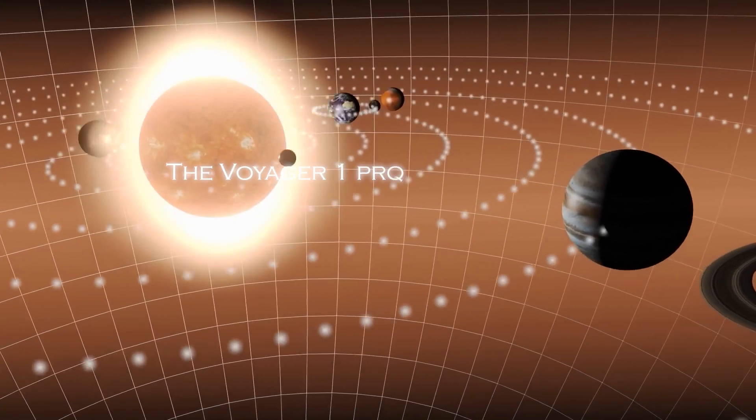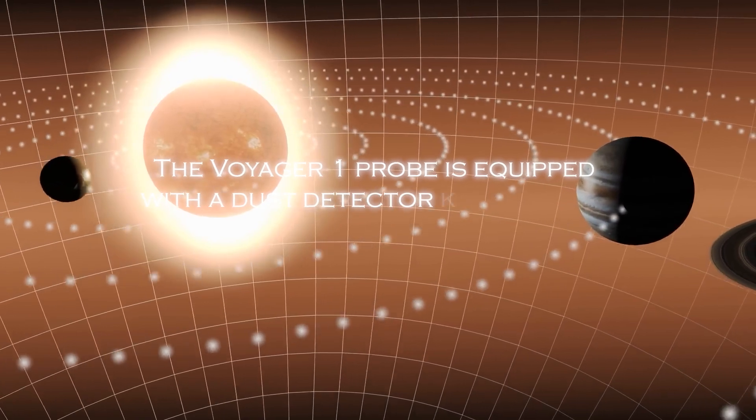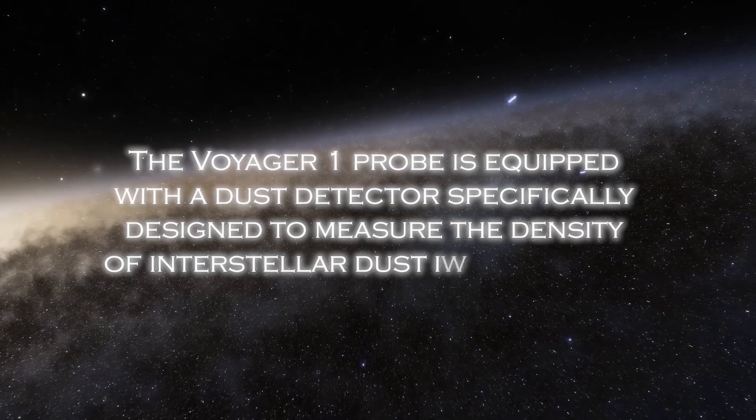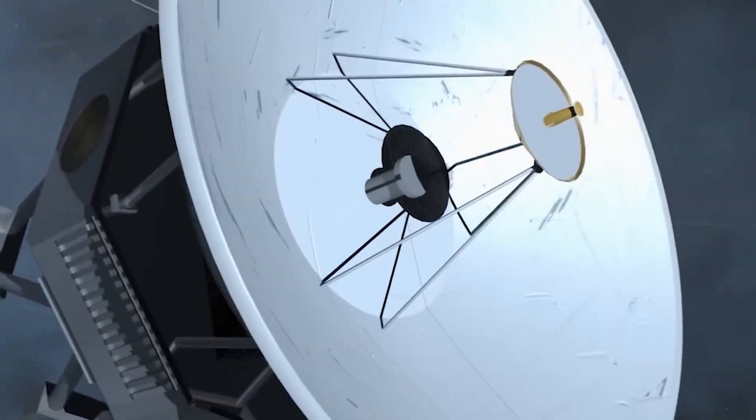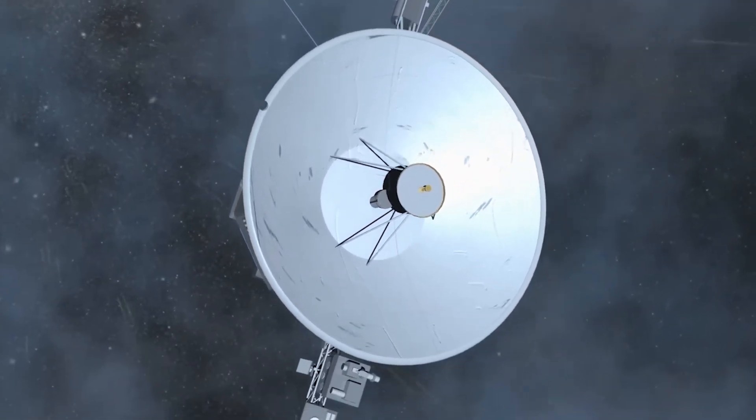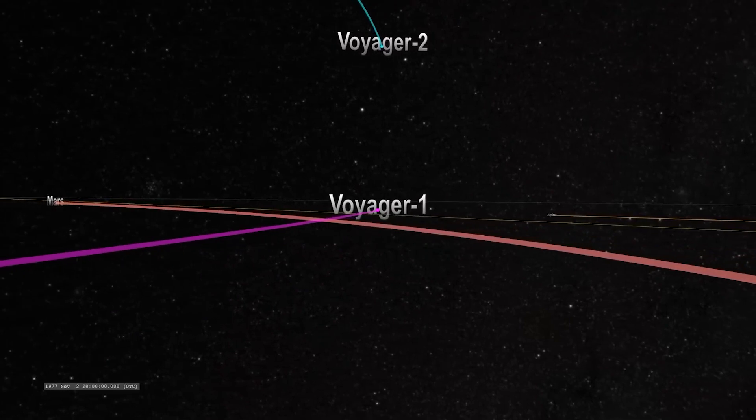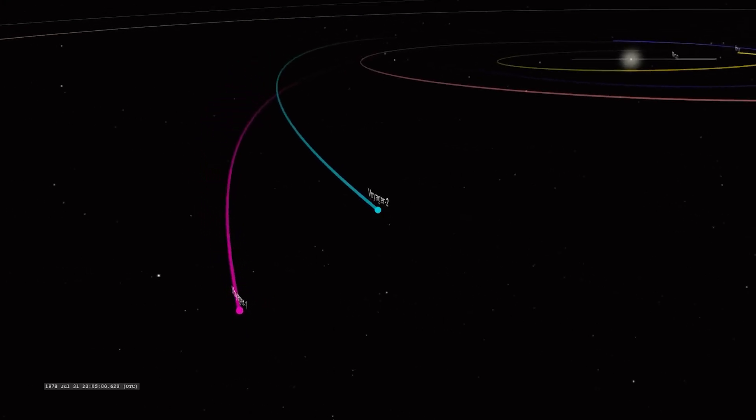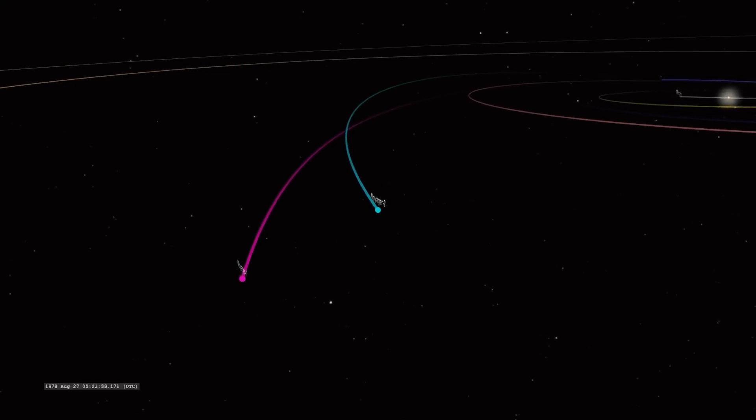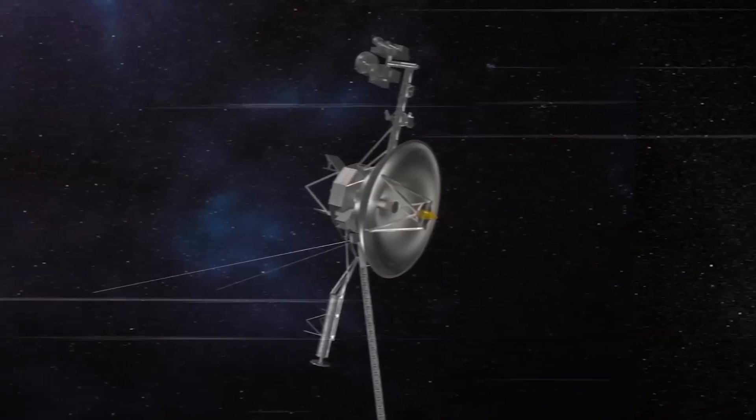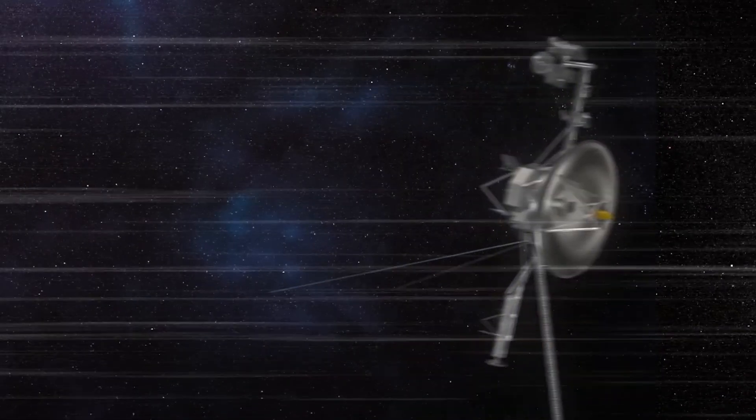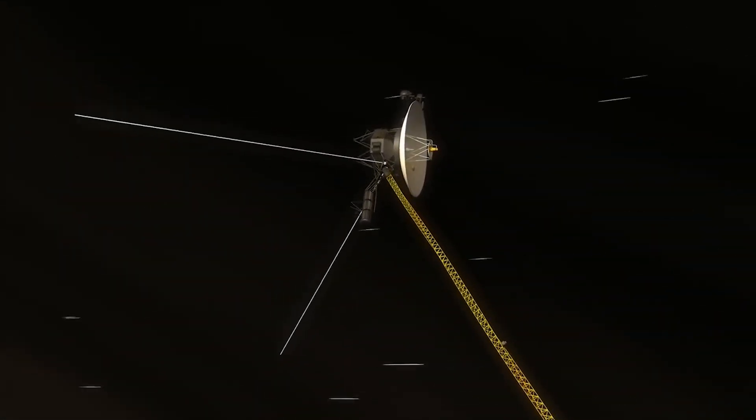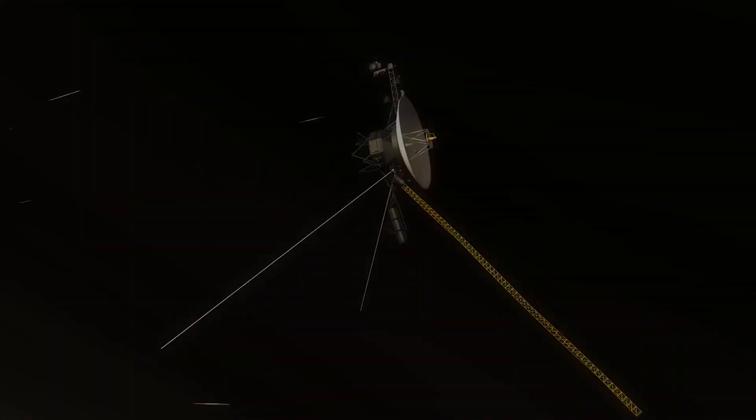The Voyager 1 probe is equipped with dust detectors, specifically designed to measure the density of interstellar dust in deep space. However, communication with Voyager 1 has become more difficult due to the limited resources NASA's global antenna system has to receive the mission signals. This has resulted in less frequent communication opportunities than they used to be. Despite this, a fascinating discovery recently emerged in the midst of the data stream.